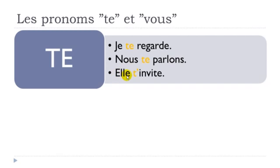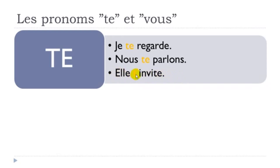The last example for te. I chose on purpose the verb inviter — to invite — because it starts with a vowel, e. As usual in French, when you get te followed by another vowel, the e disappears and you write t'. Elle t'invite — she invites you. Elle t'invite.